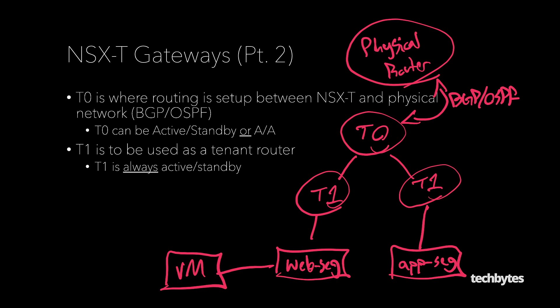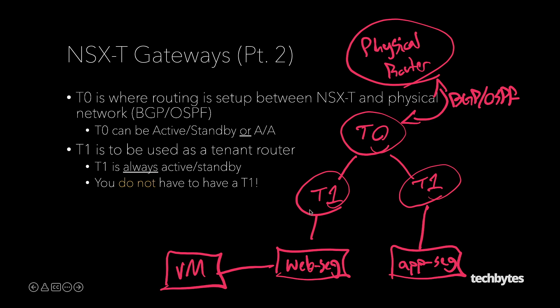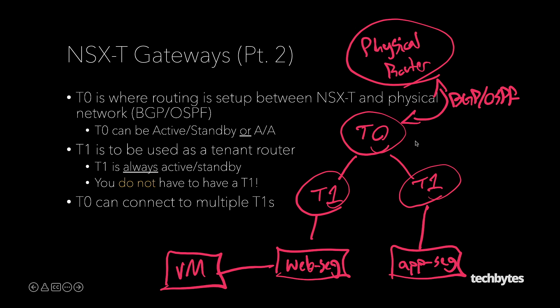The T1 is always active-standby — there is never a scenario where it will be active-active. That is primarily because we are running stateful services here, such as load balancing or network address translation. The T0 can connect to multiple T1s, which is perfectly fine. It's worth noting you will never connect a T0 to another T0 — there's no such option. It will always be T1 to T0.